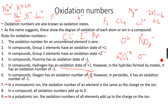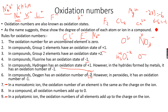The oxidation number of nitrogen in this case is x, so x minus 6 will be equal to minus 1, because the oxidation numbers of all elements add up to the charge on the ion. So x minus 6 equals minus 1, which means x equals minus 1 plus 6, giving us plus 5.